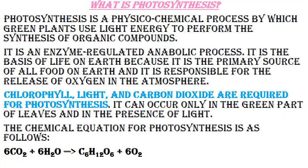What is photosynthesis? Photosynthesis is a physicochemical process by which green plants use light energy to perform the synthesis of organic compounds. It is an enzyme-regulated anabolic process. It is the basis of life on earth because it is the primary source of all food on earth and is responsible for the release of oxygen in the atmosphere. Chlorophyll, light, and carbon dioxide are required for photosynthesis. It can occur only in the green parts of leaves in the presence of light. The chemical equation for photosynthesis is: CO2 + water → glucose + O2.